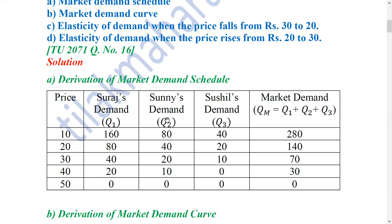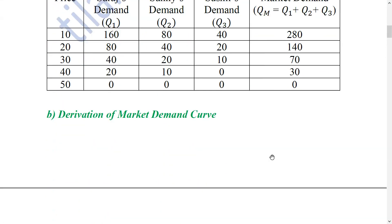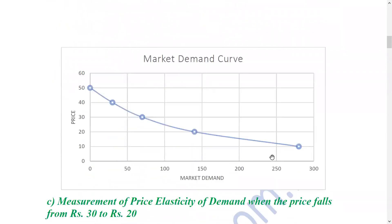When you obtain the market demand for 3 individuals, if you assume Q1, Q2, Q3 at each price for 3 individuals, the market demand is the sum. The market demand curve derivation: with price on the y-axis and quantity demanded on the x-axis, we plot the individual demand curve derivation.